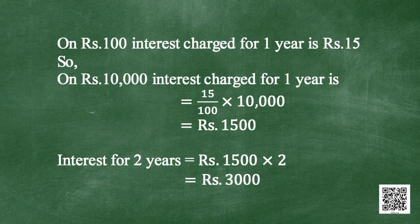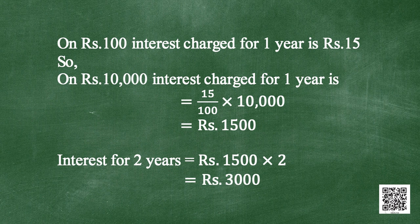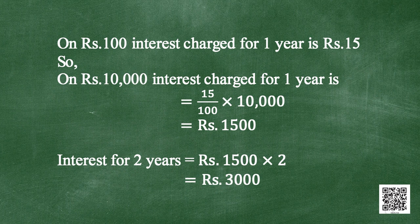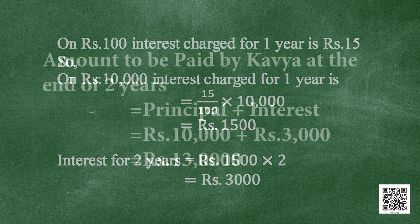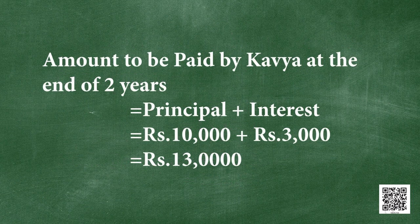One can also solve this problem without using the formula. On rupees 100, the interest charged for 1 year is rupees 15. So on rupees 10,000, interest for 1 year is 15/100 multiplied by 10,000 = rupees 1,500. Interest for 2 years = rupees 1,500 multiplied by 2 = rupees 3,000. Amount to be paid = rupees 10,000 plus rupees 3,000 = rupees 13,000.